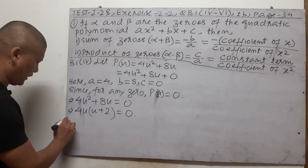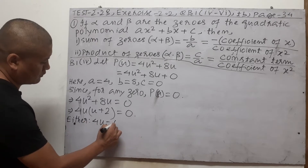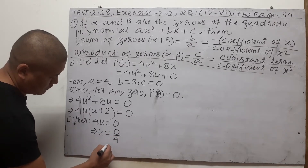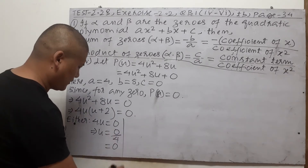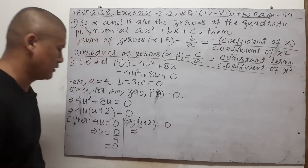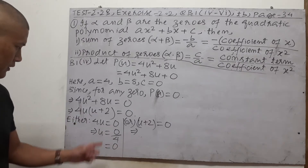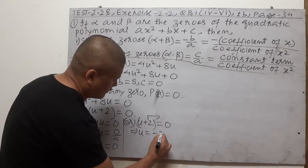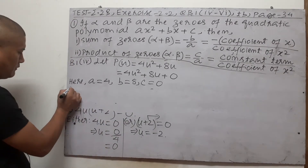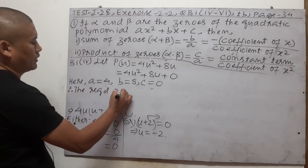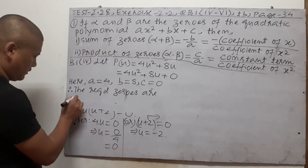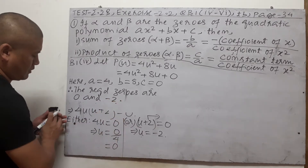We've managed to factorize. So either the first factor 4u = 0, giving u = 0, or the second factor u + 2 = 0, giving u = −2. Therefore the required zeros of this polynomial are 0 and −2. That's our first answer.